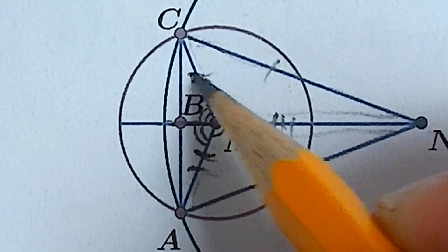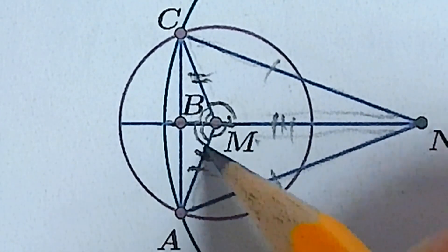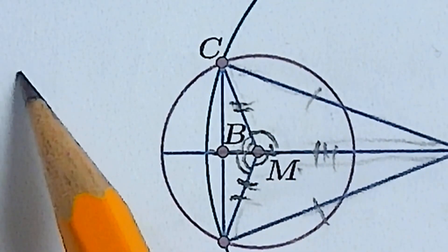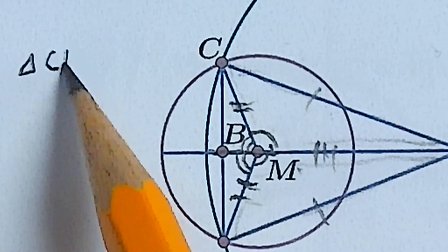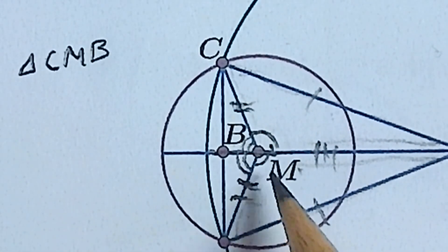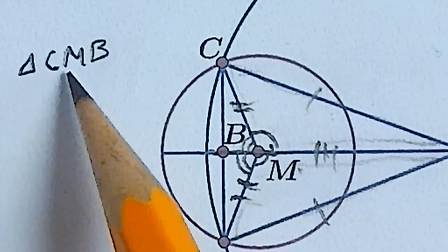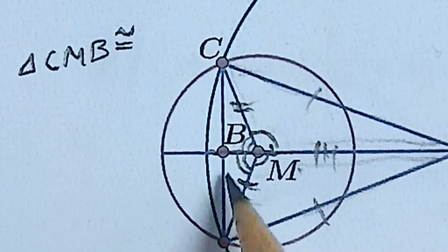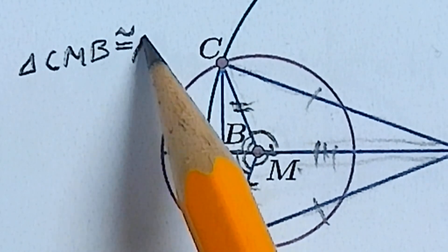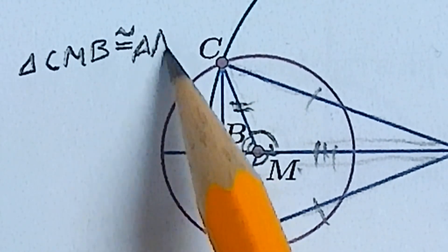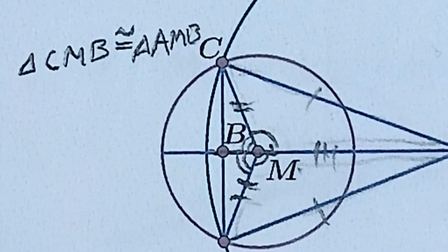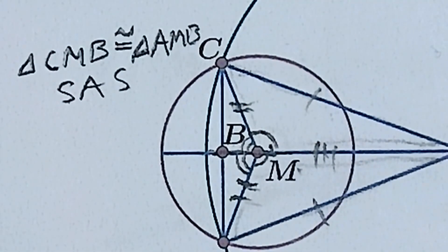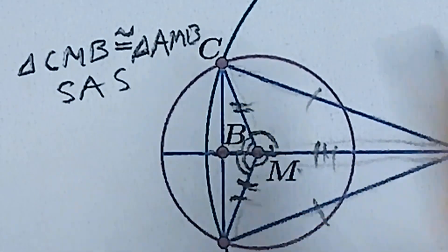And because we already know this side is the same, and we have a shared side here, now we have side angle side that these two triangles are the same. So we know that triangle CMB, cosmic microwave background, there it is, it's unrelated. Okay, triangle AMB, by side angle side, and therefore finally.